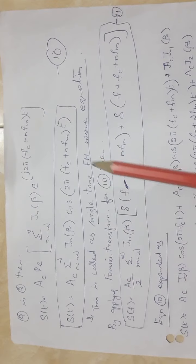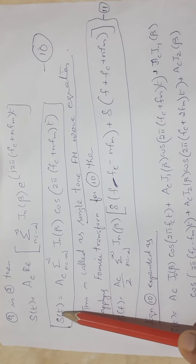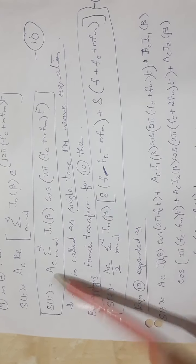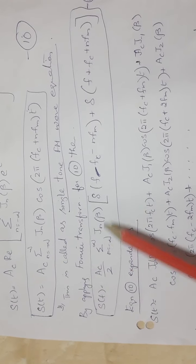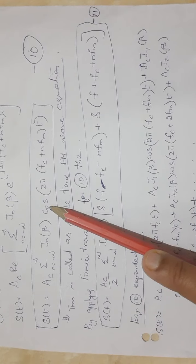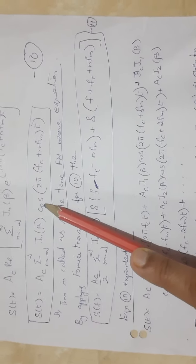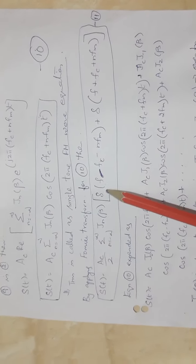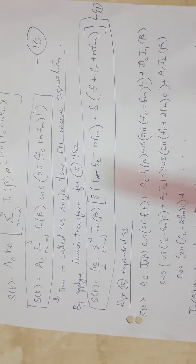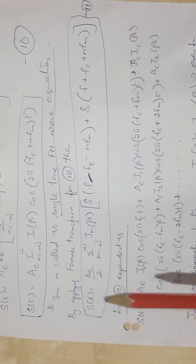This signal is also called the single-tone FM wave equation, expressed in the time domain. To analyze characteristics in the spectral domain, we take the Fourier transform. Therefore S(f) = Ac · Σ Jn(β) · [δ(ω − ωc − n·ωm) + δ(ω + ωc + n·ωm)] / 2, where the cosine is expressed using delta functions at ±ωc.